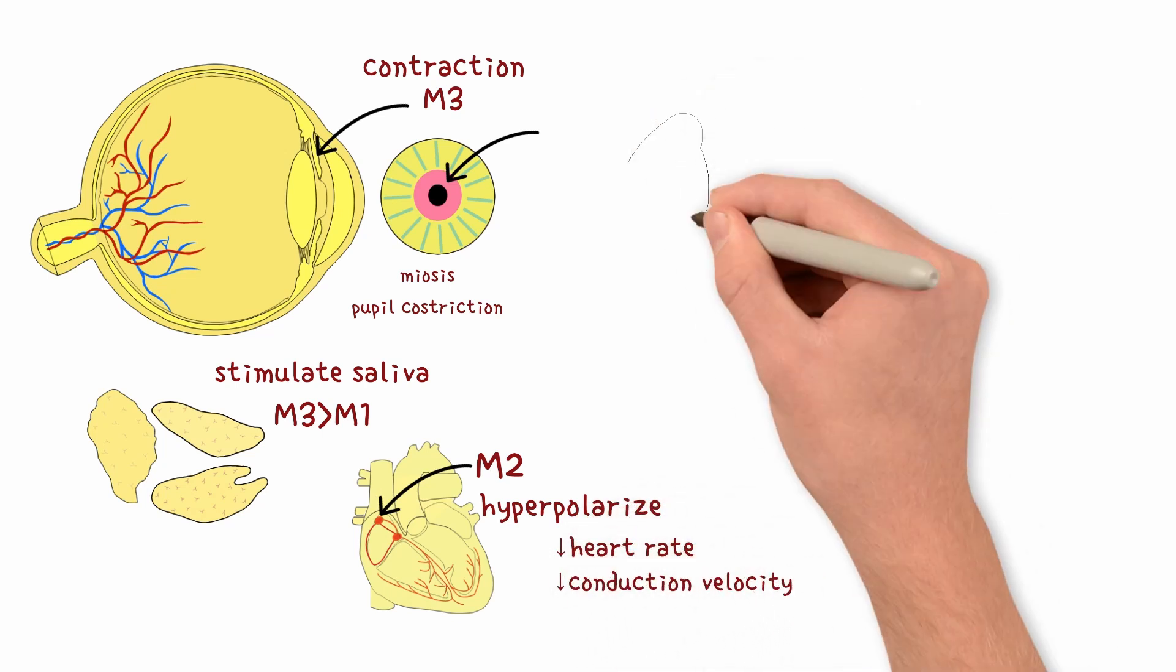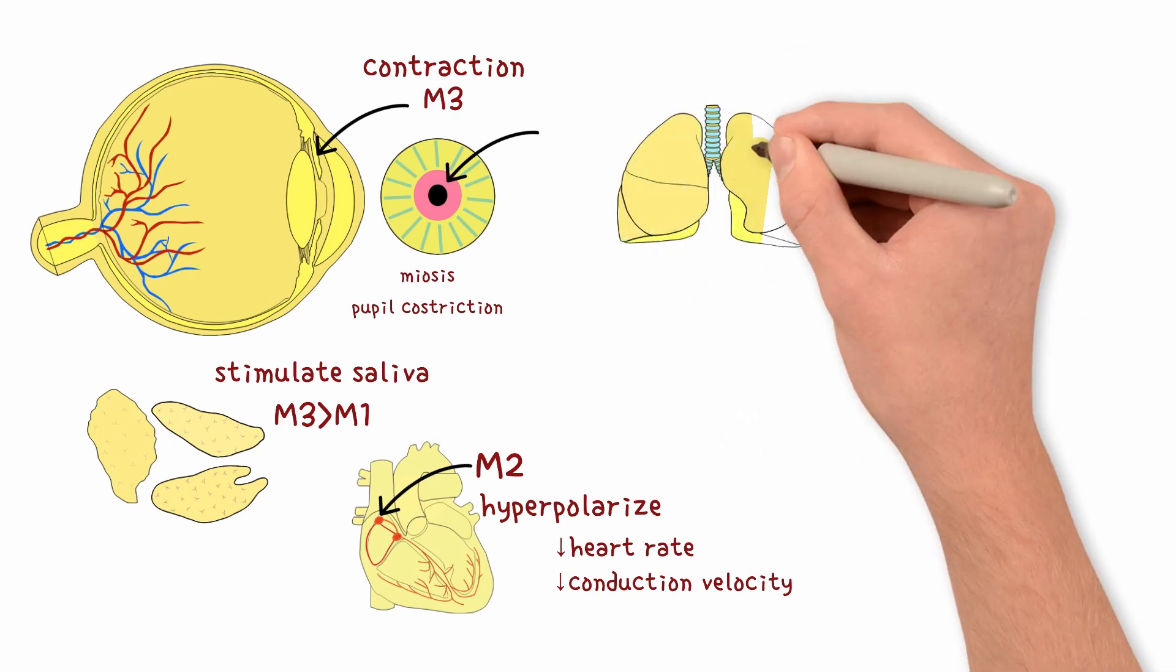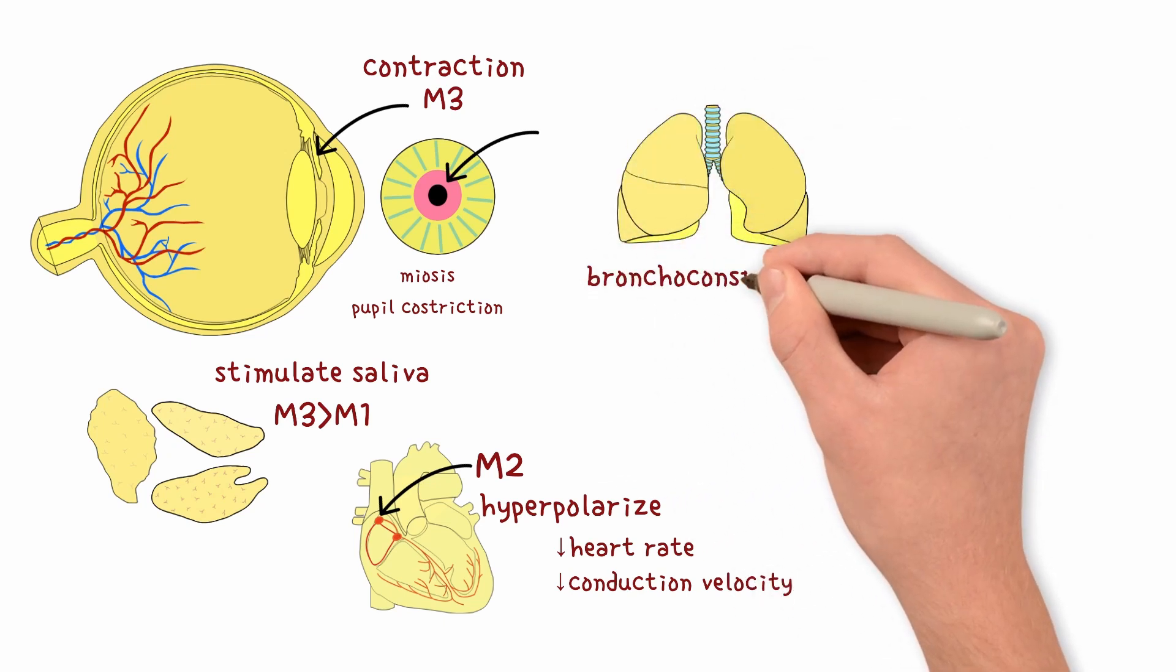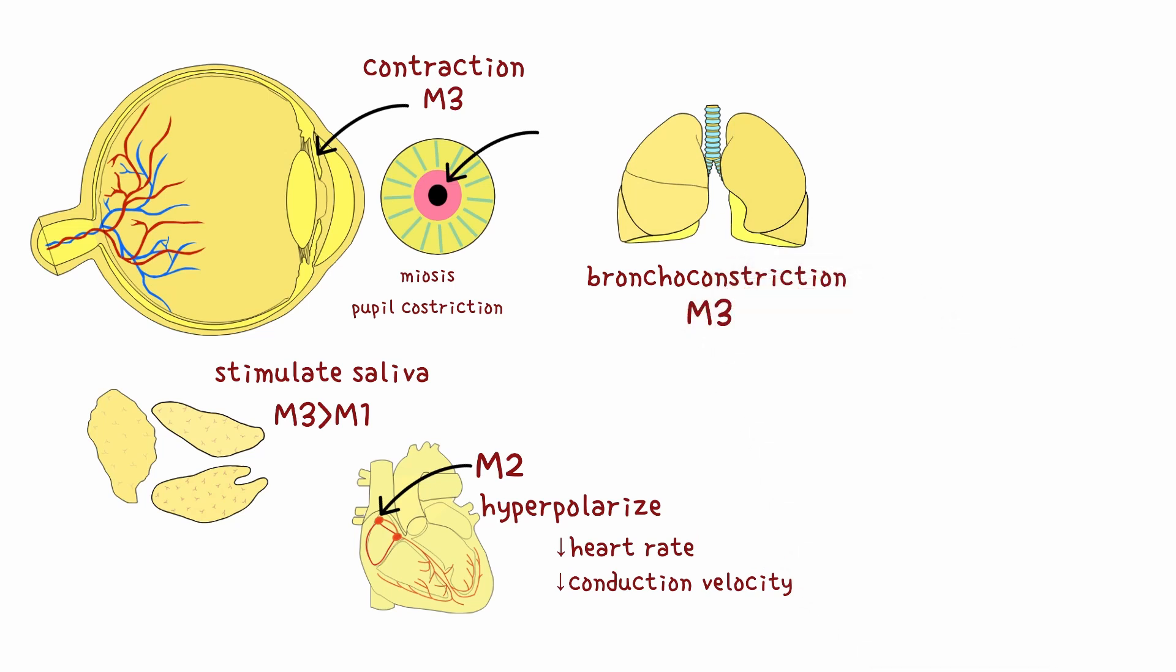The lungs. The system maintains a normal baseline tone in the bronchial smooth muscles, keeping them slightly contracted during rest. This helps trap inhaled irritants. The receptor is M3.